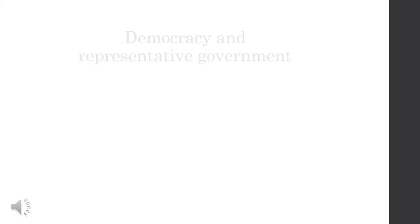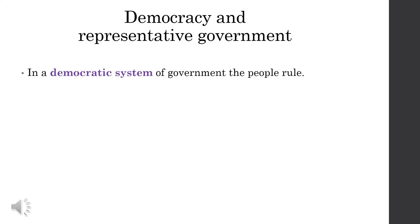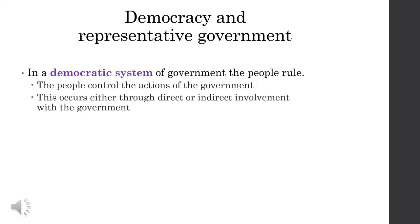We consented to be governed under limited government — the government's only going to do what we tell it to do — and everyone is hopefully going to follow the rule of law. But we still have one important question to answer: Who is actually in control of our government? To answer that question, we need to look at two additional concepts: democracy and representative government. In a democratic system of government, the people rule. The citizens of that country control the actions of the government, and this occurs either through direct or indirect involvement with the government.